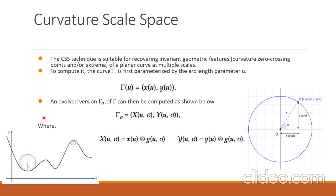To calculate curvature at any point, first we should parameterize the curve using arc length parameter u. The curve is parameterized as curve(t) = (x(u), y(u)). This can be understood from the example of parameterizing a circle as (r·cos θ, r·sin θ), giving the circle equation x² + y² = r². Similarly, for any curve, we parameterize using parameter u. After that, in the curvature scale space technique, an evolved version of curve(t) is calculated using a formula where the x and y parameters are convolved with a Gaussian kernel of size sigma.